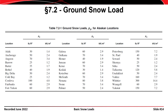The Alaskan ground snow load ranges from a low of 25 pounds per square foot — not much higher than Ohio — all the way up to 300 pounds per square foot for Whittier, Alaska. That's quite a high load.